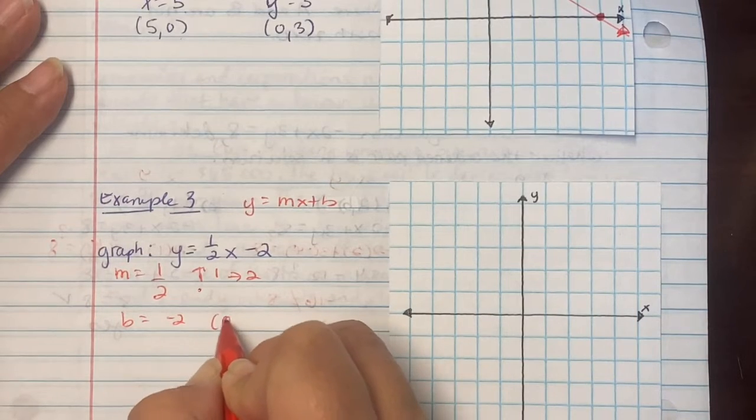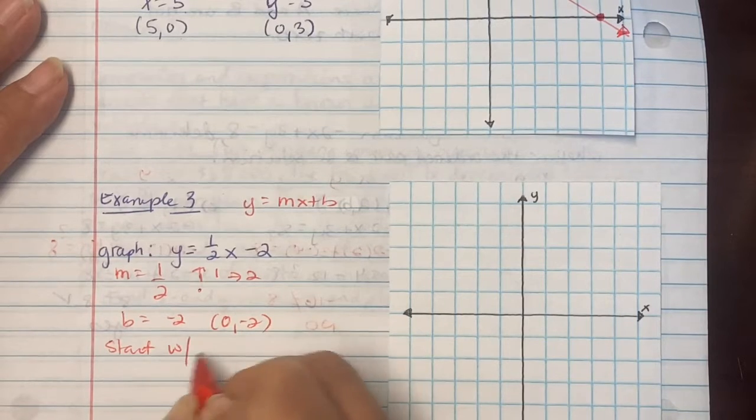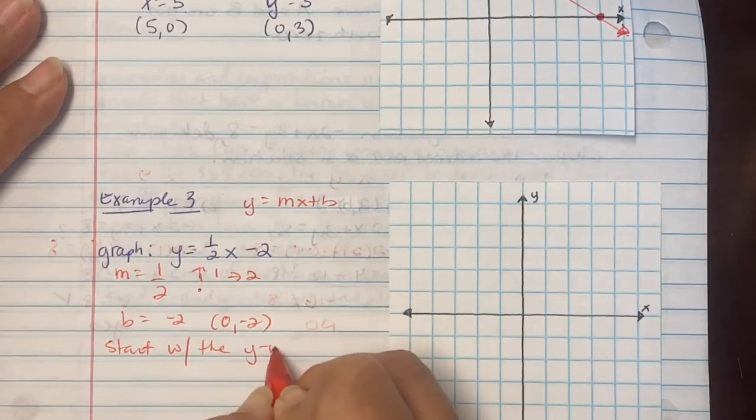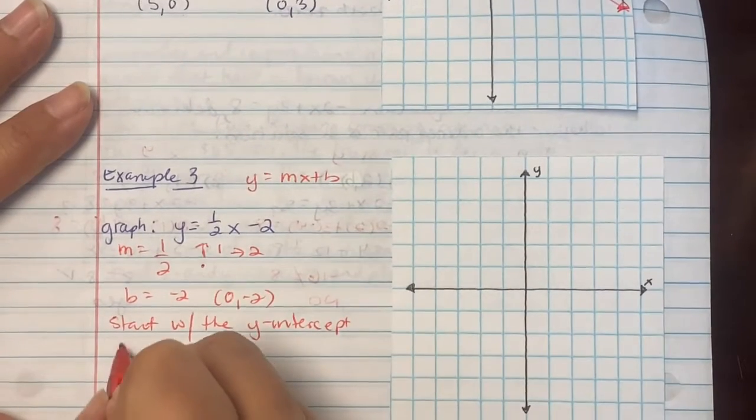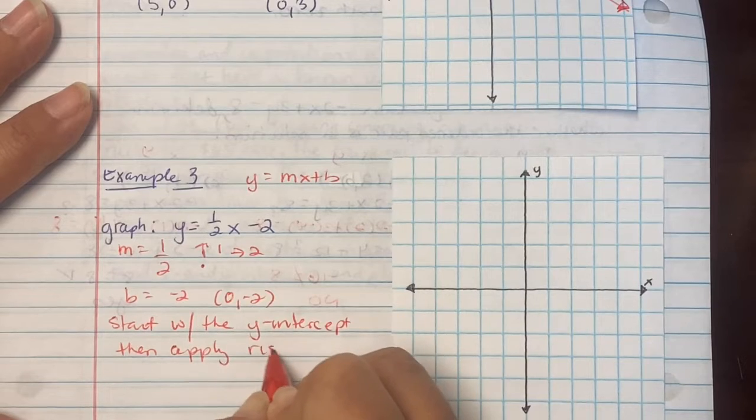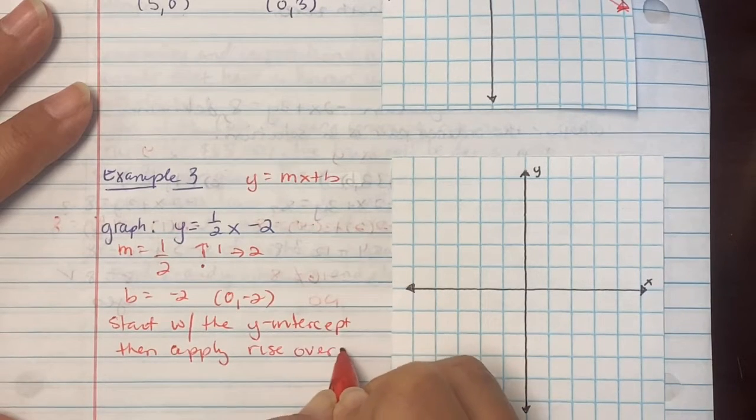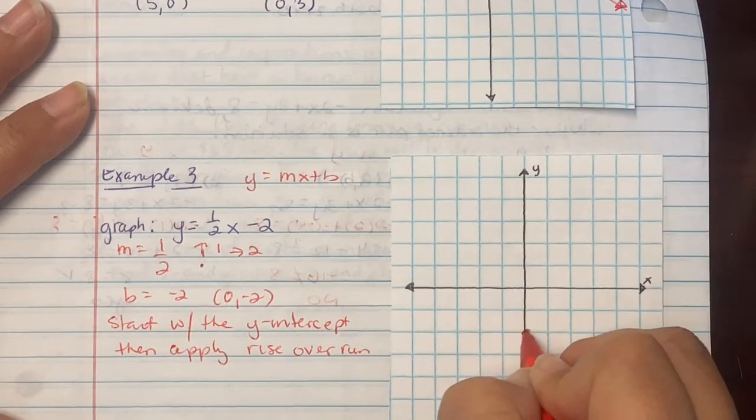The b value says it is at -2, which means the y intercept is (0, -2). So you're going to start with the y intercept. And then apply the slope. Then apply rise over run.